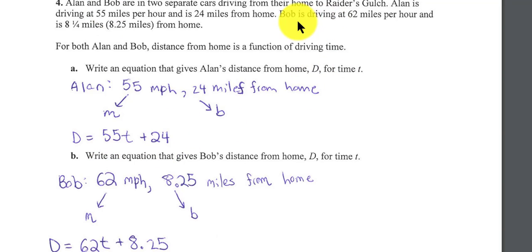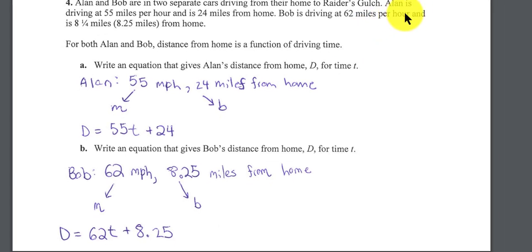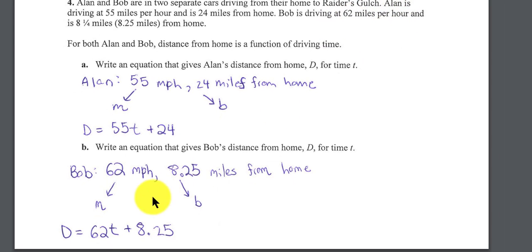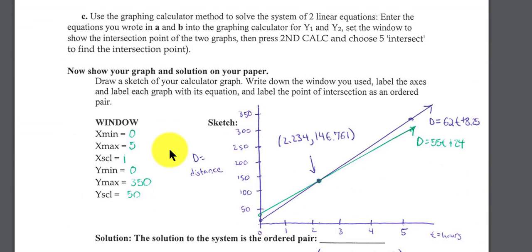Then we have Bob. It looks like Bob, he's driving at 62 miles an hour. So the slope is 62, because the slope represents a rate. So the rate of speed is 62 miles per hour. Initial distance from home is 8.25 miles. So we have two equations. So we could solve this by substitution. If d equals everything I'm circling here, I could take this and put it into d, solve for t, and I could actually solve this system. But they ask us to graph.